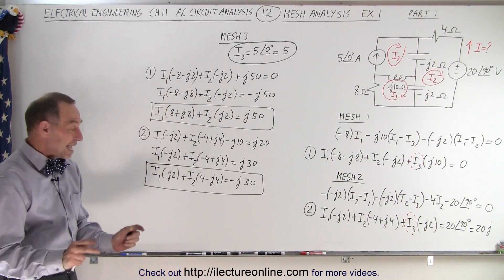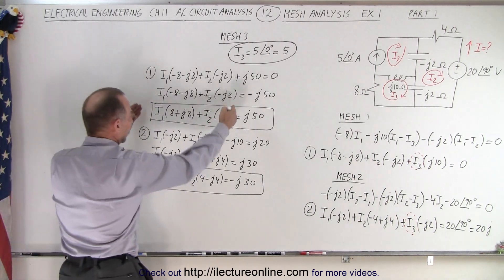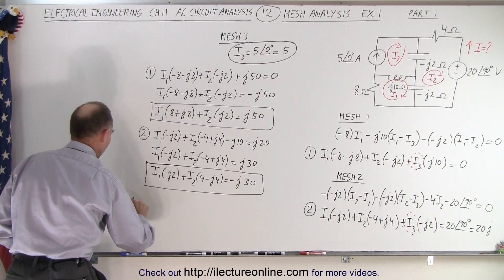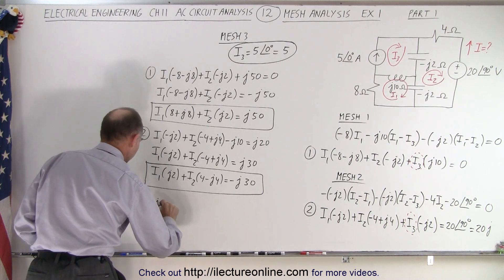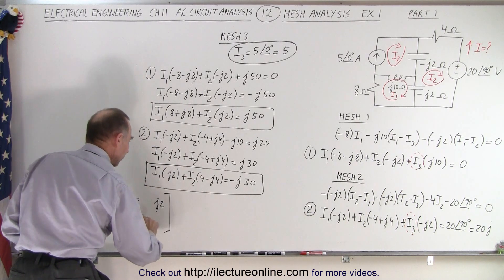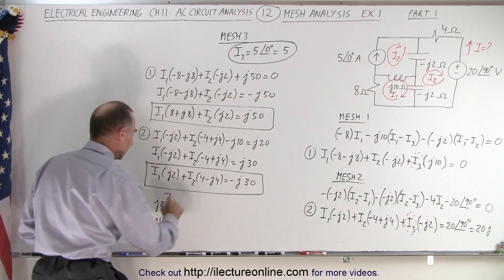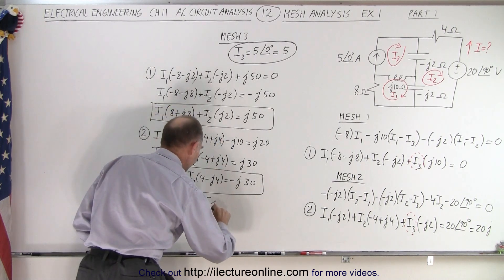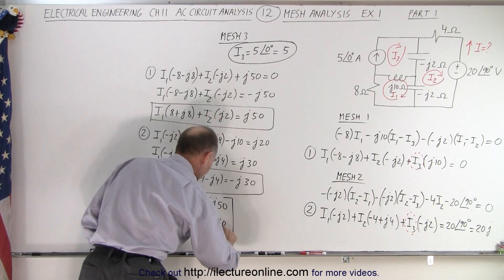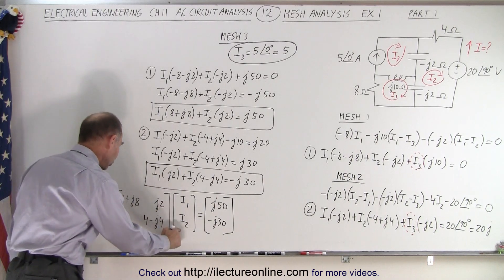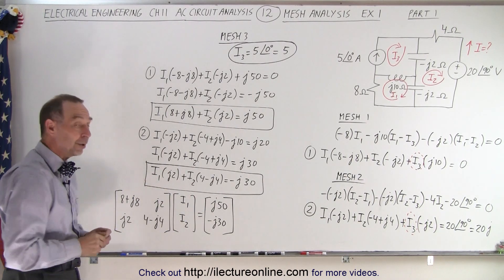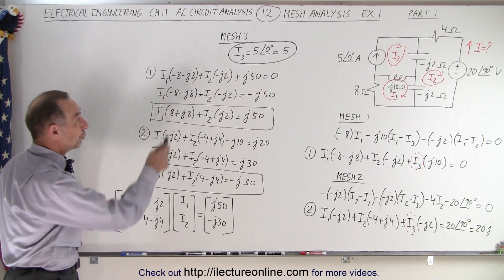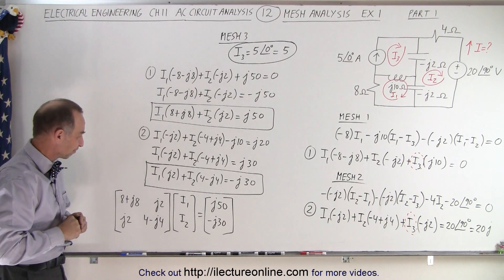Now we set up the matrix to solve, since we have two equations and two unknowns. The first equation gives us coefficients 8 plus J8 and J2; the second equation gives us J2 and 4 minus J4. We multiply that times I1 and I2, which gives us plus J50 and minus J30. On the next video we'll go ahead and solve this matrix and find I1 and I2, which will ultimately give us the final current in the circuit. And that is how it's done.